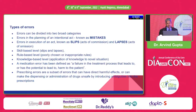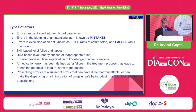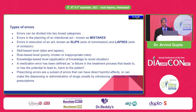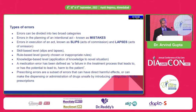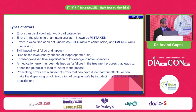There are different types of errors. Errors in the planning of an intentional act are known as mistakes — this is serious. Errors in the execution of an act are known as slips, which are acts of commission that we do almost on a daily basis, or lapses, which are acts of omission. At the skill-based level we have slips and lapses; at the rule-based level we sometimes break the rule; and there are knowledge-based errors where we have the knowledge but don't apply it when the patient is in front of us.